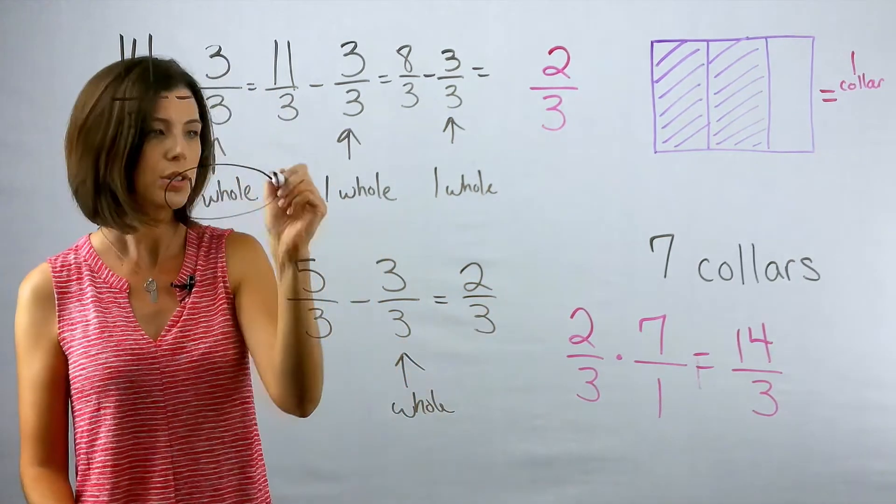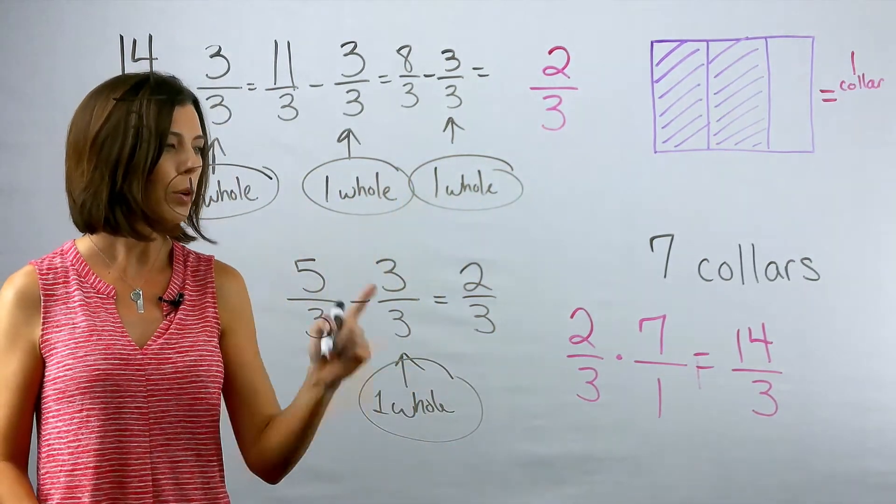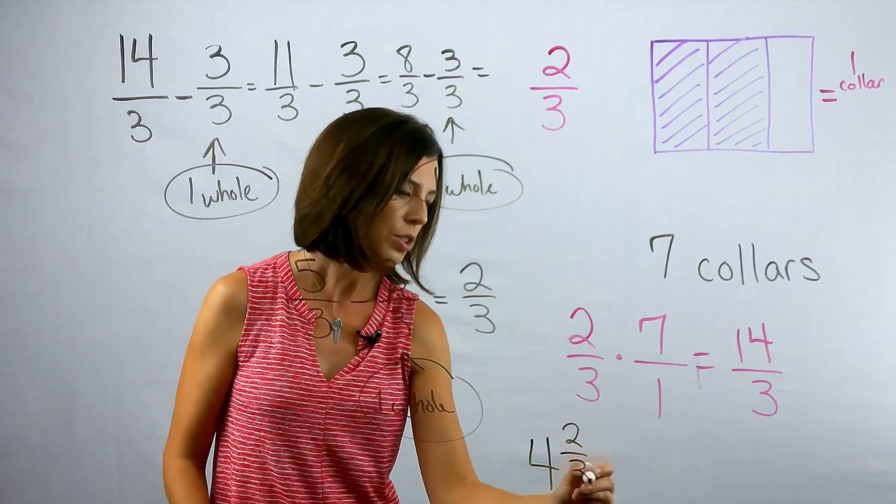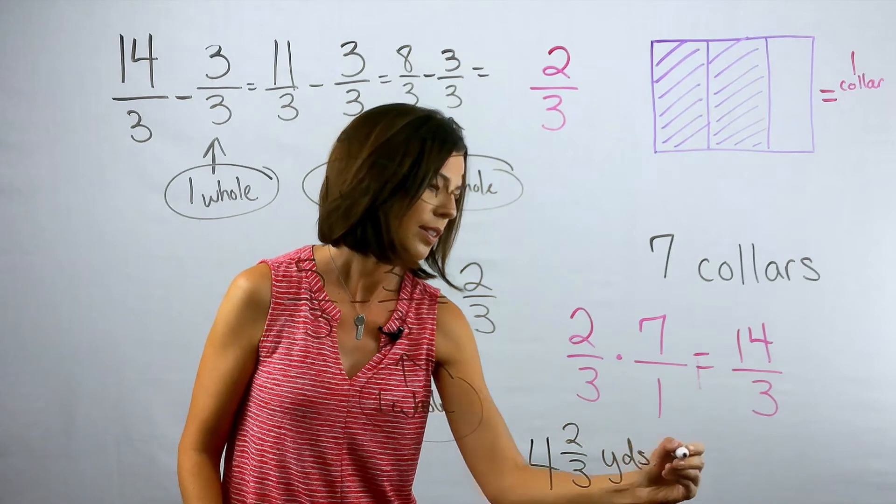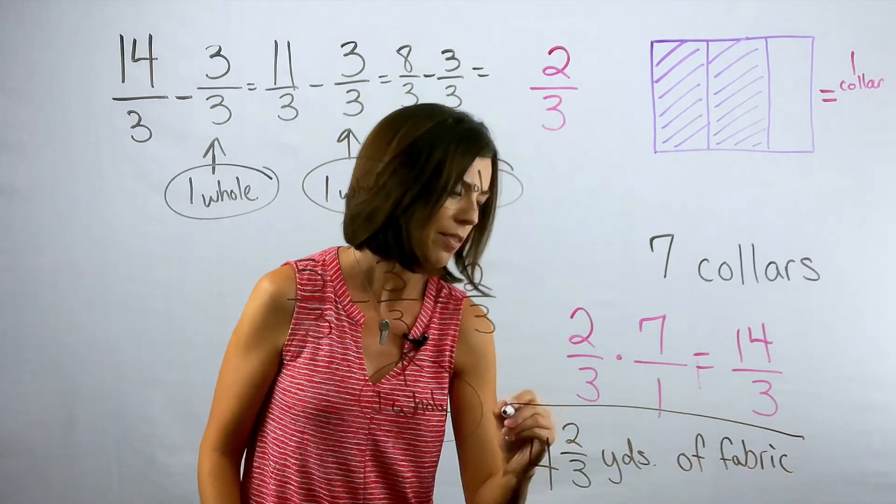Now, circle all of your wholes and let's add them up. So I have four wholes and two-thirds, or four and two-thirds yards of fabric, is how much I'm going to need to make my seven collars.